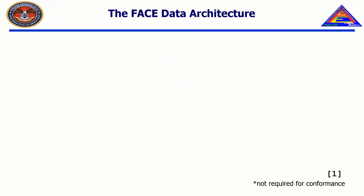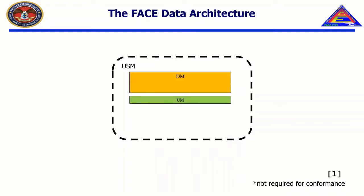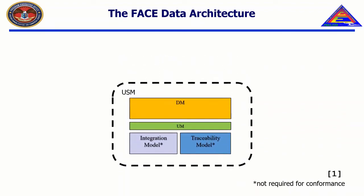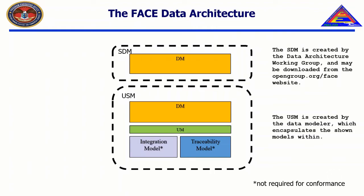The FACE data architecture defines the structure for UOP supplied models, or USMs, which contain data models, sometimes written as DM, UOP models, sometimes written as UM, integration models, and traceability models. Additionally, the FACE data architecture defines a shared data model, or SDM. The syntax for each of the separate models are defined in the FACE technical standard edition 3.1 and the OpenUDDL standard edition 1.0.